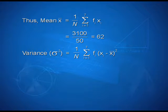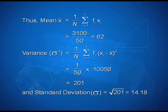Variance sigma square can be calculated as 1 upon n into summation i varying from 1 to 7 fi into xi minus x bar whole square, that is equal to 1 upon 50 into 10050. This on calculation gives us 201. And standard deviation sigma is equal to positive square root of 201, that is 14.18.